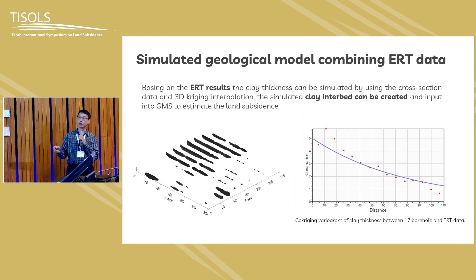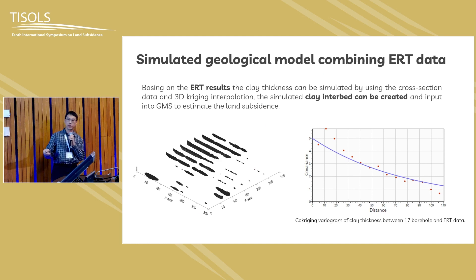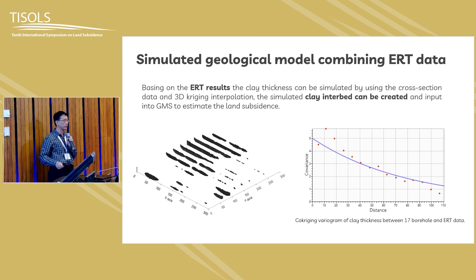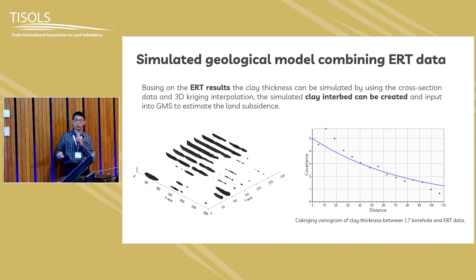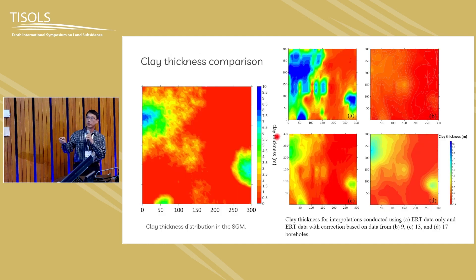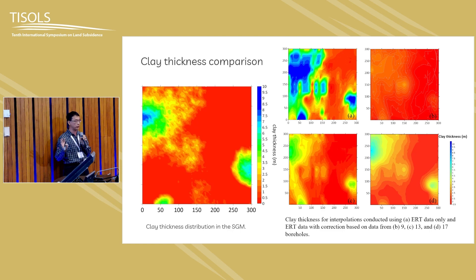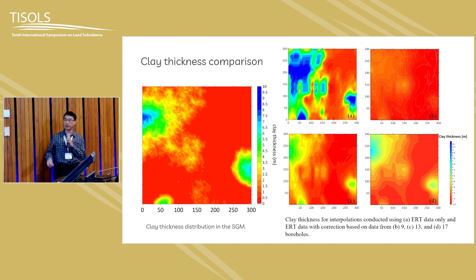We then simulate geological models combined with ERT data, using borehole numbers to do corrections. For example, if we have a borehole, we can exactly compare the clay thickness from the borehole with the ERT result — and we know they have differences. We use the Kriging method to connect these two quantities and then interpolate the clay thickness. If we only use ERT data, we can see that it overestimates — the blue color is very thick. As we increase borehole numbers (9, 13, and 17), we get better results. The 13-borehole case seems to more precisely capture the thickness.